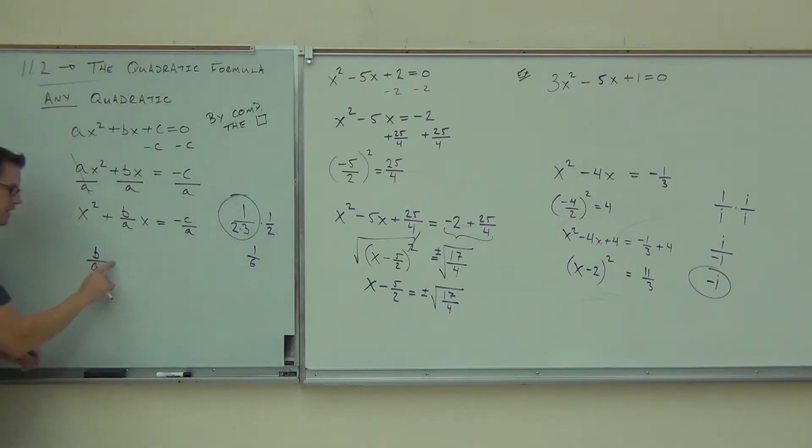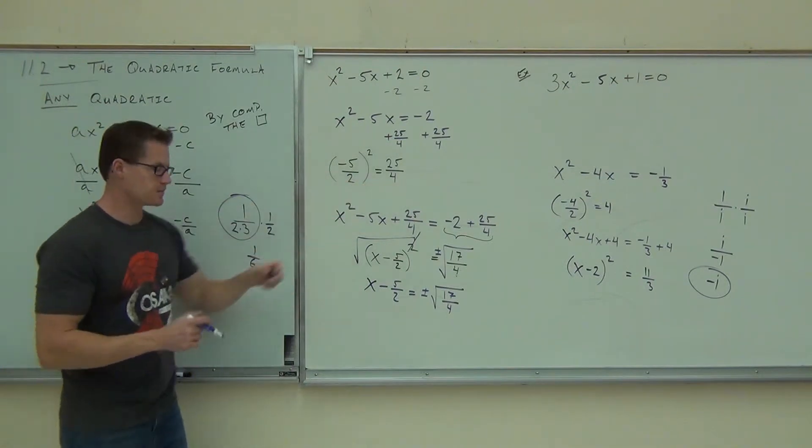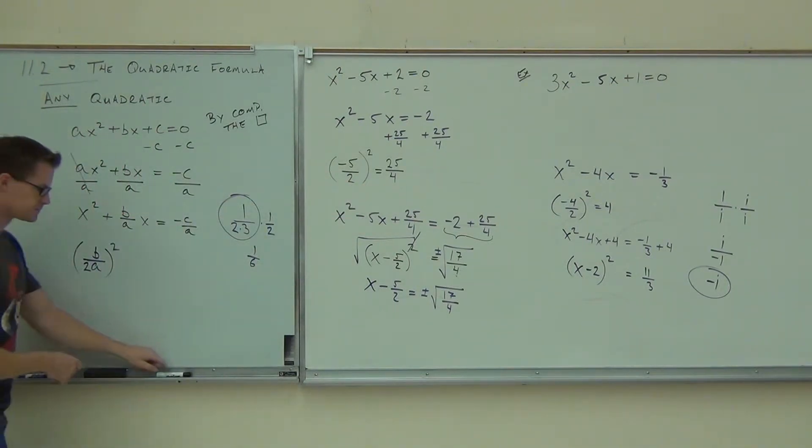So if I want to take half of b over a, what I'm going to do is say b over a, half of that, is b over 2a. So I take half of this term, and I square it. That's exactly what we did here. We took half of this, divided by another two, then we squared it, and we got this thing. And we added that to both sides. So notice this is b squared over 4a squared.